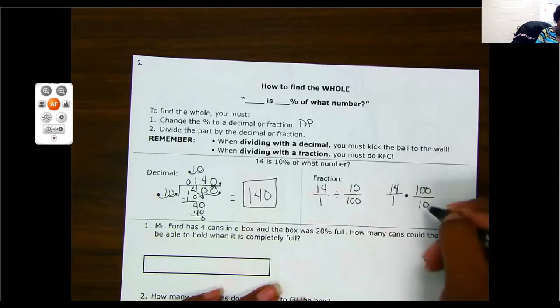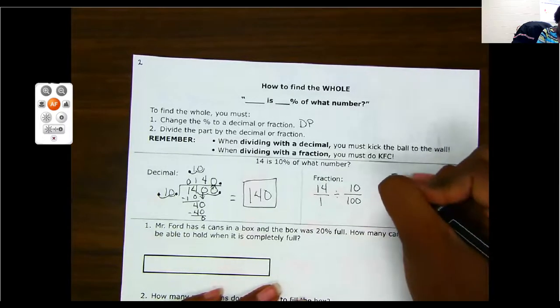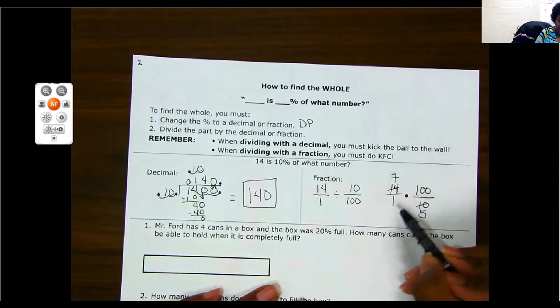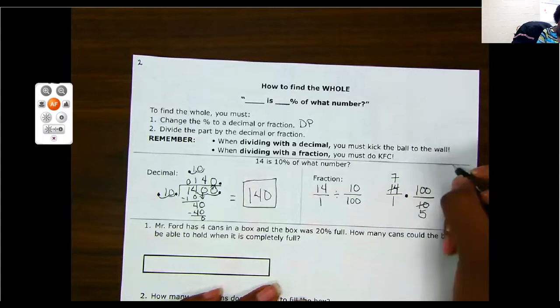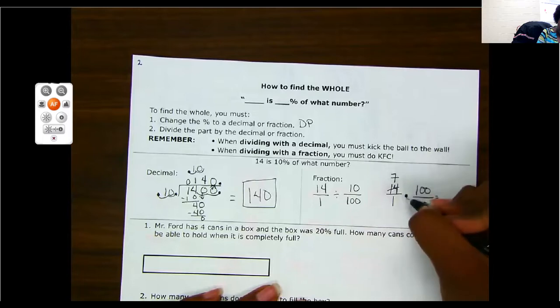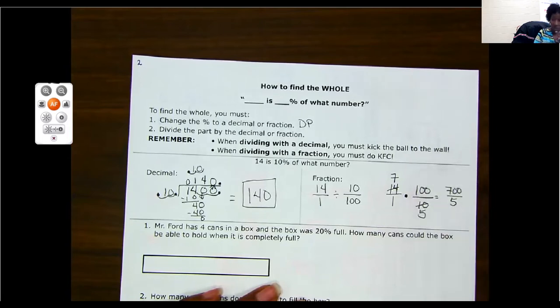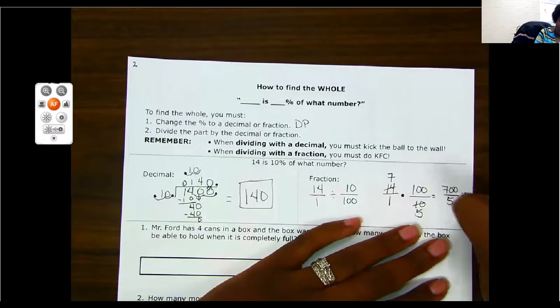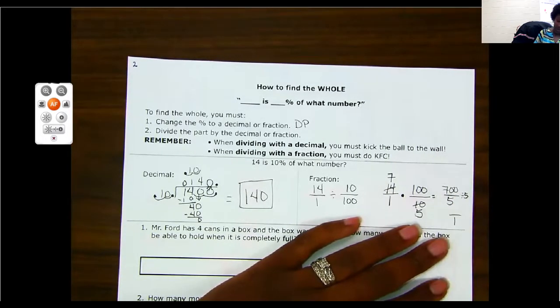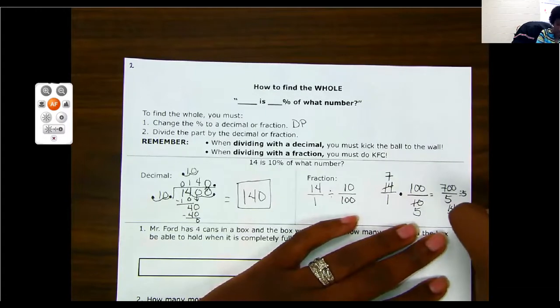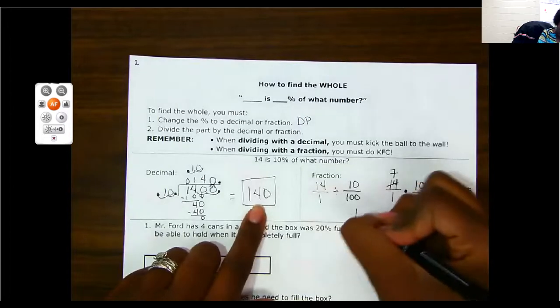These are both even so I can divide them by two. I now have a seven and now I have a five. Now I'm going to go ahead and multiply. Seven times 100 is 700. One times five is five. I can divide these both by five. I now have a one on the bottom. And if I do 700 divided by five, I get 140. 140 over one is the same as 140.